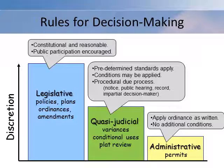The review of conditional uses and special exceptions is considered a quasi-judicial decision. This means that decision makers act like a judge, reviewing the facts of the case and determining if the applicant meets the standards of the ordinance. They have authority to attach conditions to the permit to address expected project impacts. Quasi-judicial decision makers must also follow the rules of procedural due process, including holding a public hearing, providing notice, and making an impartial decision. They should also keep a record of their decision, including the process, decision standards relied upon, and rationale — which is helpful in case a decision is ever appealed.